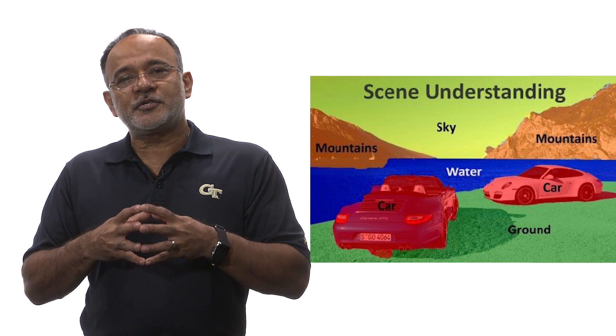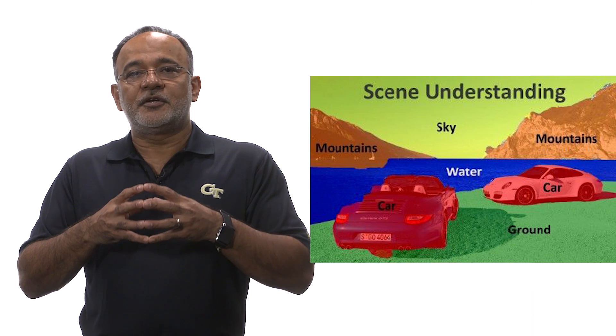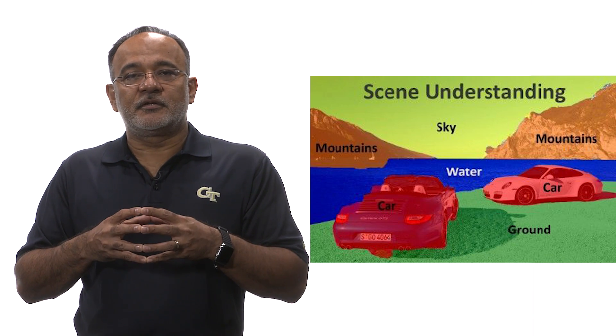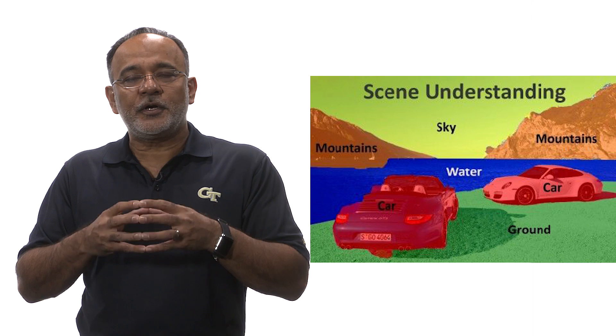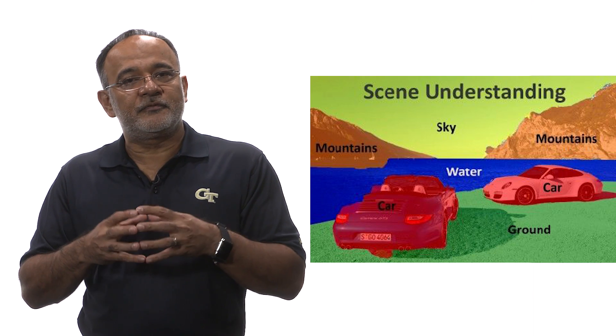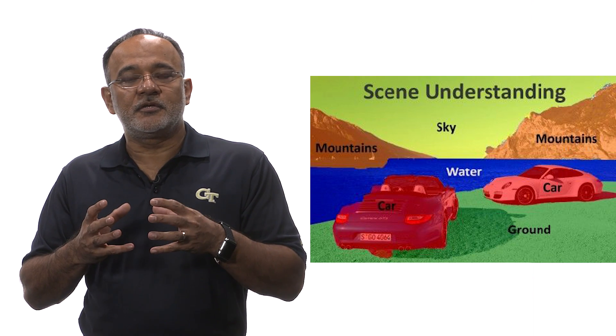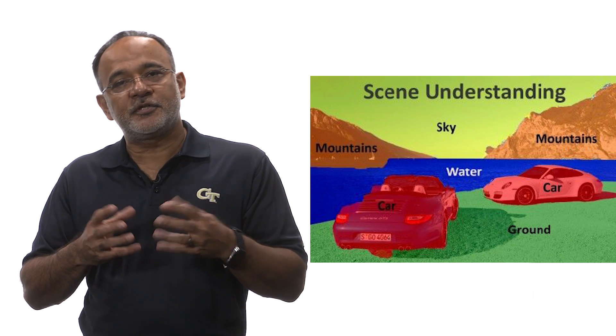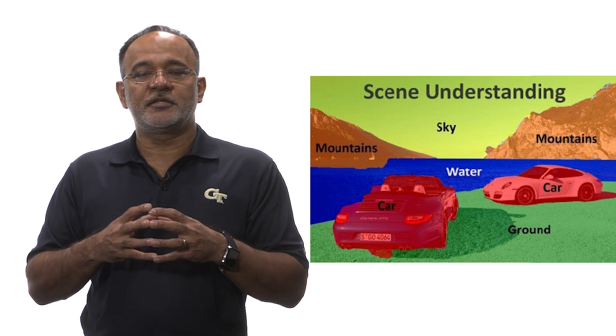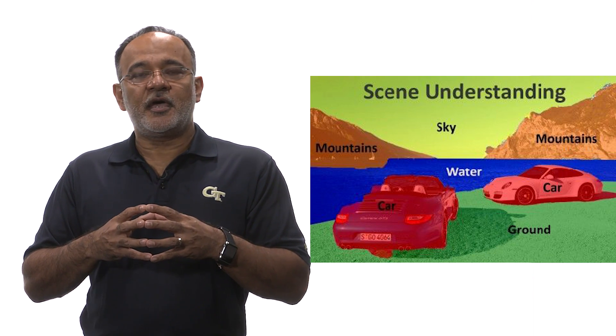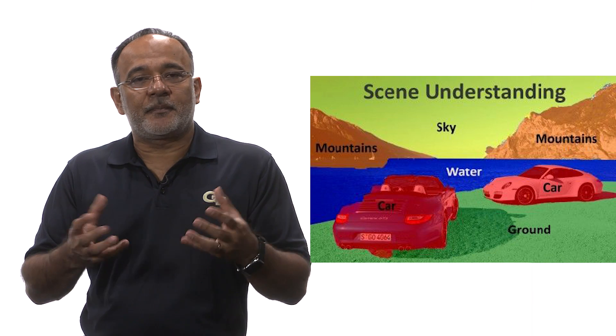Computer vision is really about interpreting and analyzing the scene — that is, what is the content of the image, who is in there, what is in the image, and what is happening.